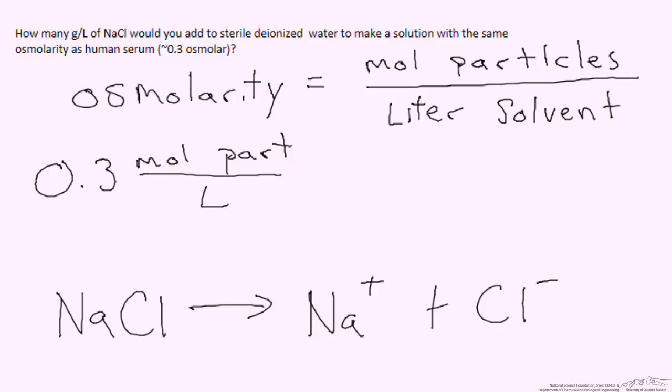To answer that question we fundamentally have to ask ourselves if we have one mole of sodium chloride, what does that turn into upon addition to solution? We know just from basic salt chemistry that we go from one mole of sodium chloride would actually turn into one mole of sodium ions plus one mole of chloride ions. So that would fundamentally give us one mole of sodium chloride turning into two moles of particles - the one mole of sodium and the one mole of chloride.